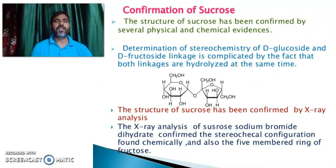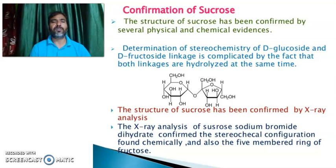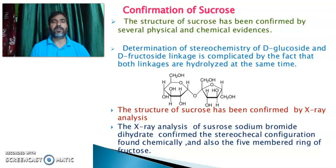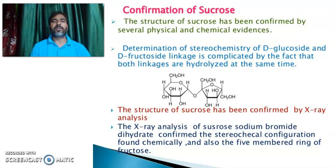The structure of Sucrose has been confirmed by several physical and chemical evidence. Determination of the stereochemistry of D-glucoside and D-fructoside linkages is complicated by the fact that both linkages are hydrolyzed at the same time. The structure of Sucrose has been confirmed by X-ray analysis, which conforms the stereochemical configuration determined chemically and also the five-membered ring of fructose in Sucrose.